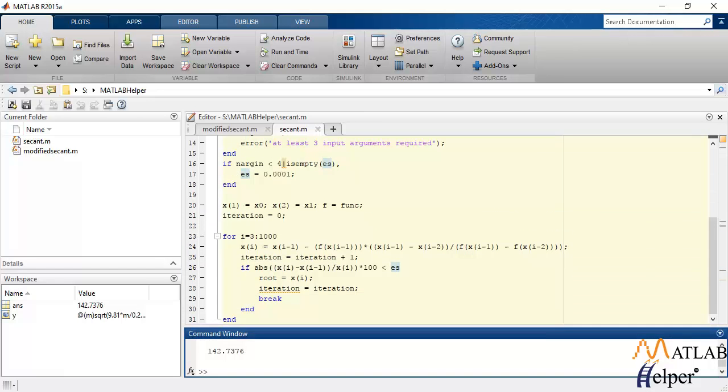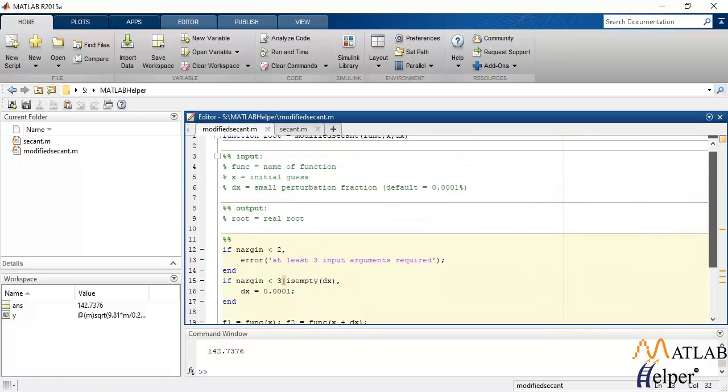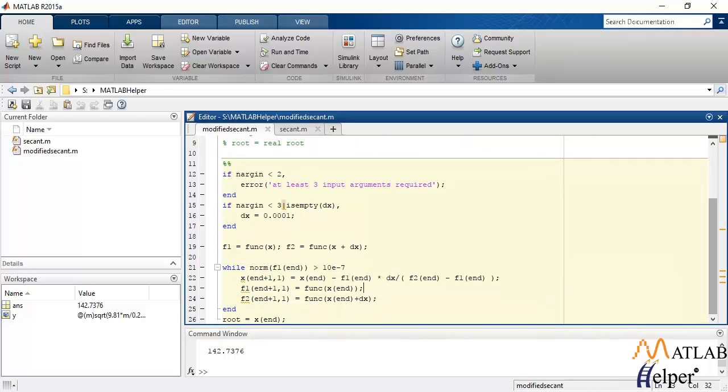Now moving on to the modified secant method we have already derived the formula and that exact formula is implemented in line 22 in the while loop. This while loop defines the terminating condition and the formula right here defines the modified secant formula similar to what we saw in the secant method.